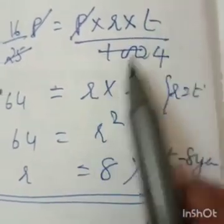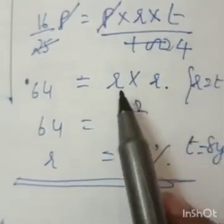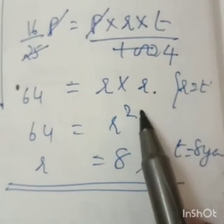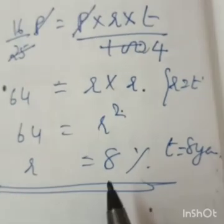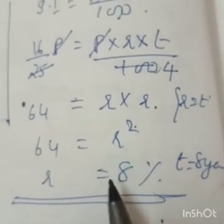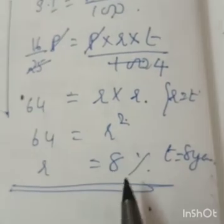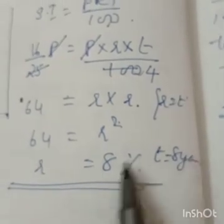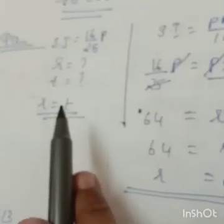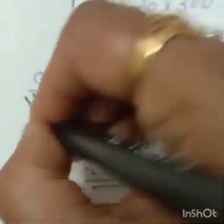R × R = R². After cutting, you get R² = 64. Square root of 64 = 8, so rate = 8% per annum. Since R = T, time = 8 years as well. Important question — practice this one.